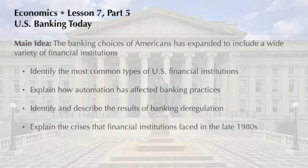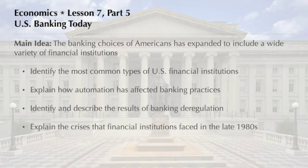Identify the most common types of U.S. financial institutions; explain how automation has affected banking practices; identify and describe the results of banking deregulation; and explain the crises that financial institutions faced in the late 1980s.